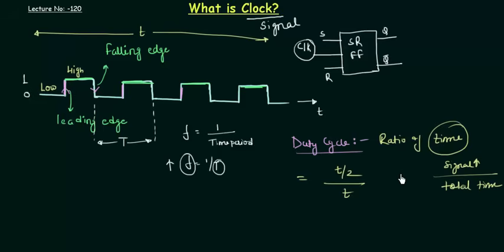So if I simplify this, I will have 1 by 2. So duty cycle for the clock is 50%. So this was a very simple presentation.